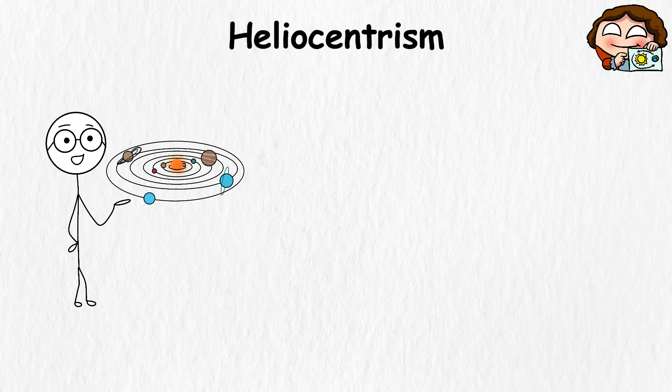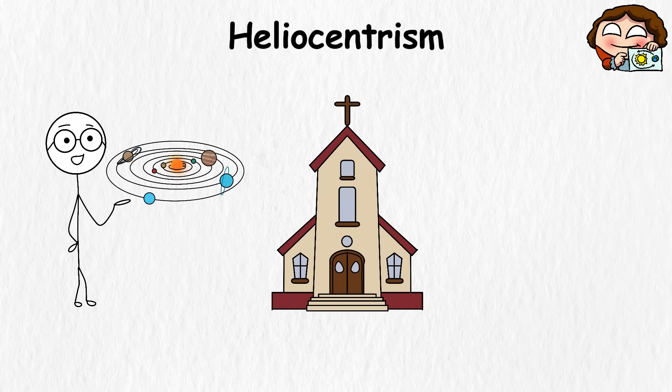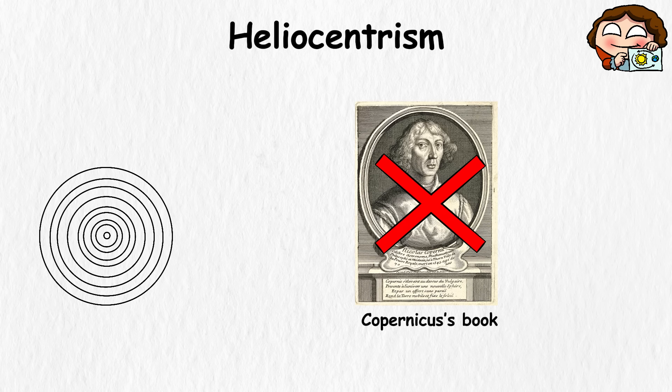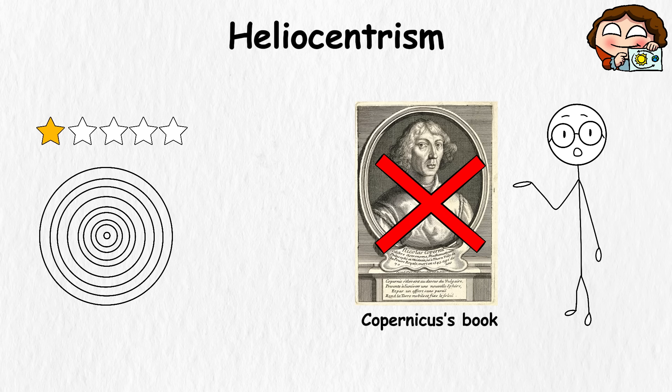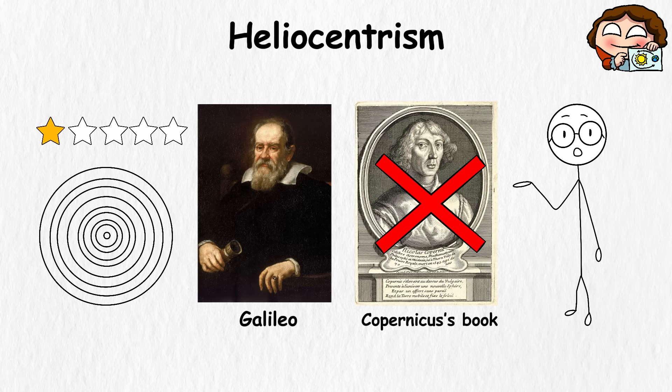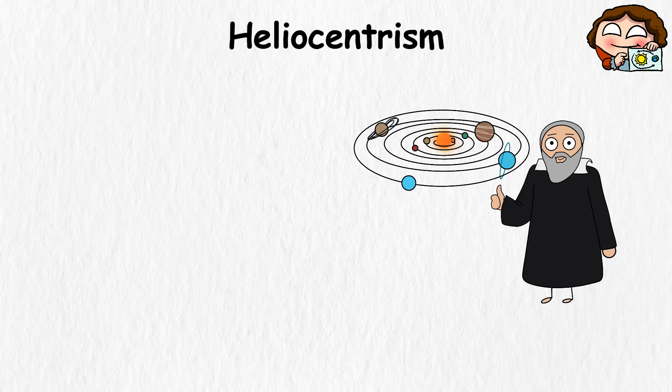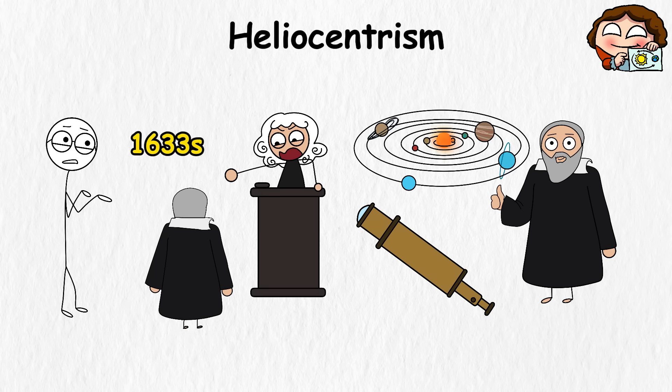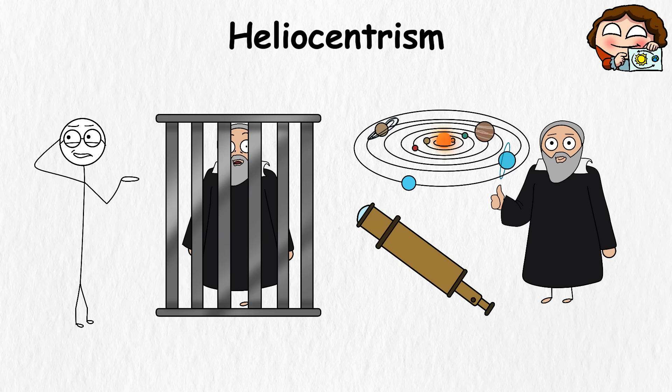As heliocentrism gained momentum, the Catholic Church decided it was time to pump the brakes on this blasphemous theory. In 1616, they banned Copernicus's book on the revolutions of the celestial spheres, giving it the ancient version of a one-star review. The clampdown didn't end with Copernicus. Scientists like Galileo, who openly supported heliocentrism with his telescope-backed findings, faced the wrath of the Inquisition. In 1633, Galileo was tried, convicted, and sentenced to a staycation under house arrest for the rest of his life.